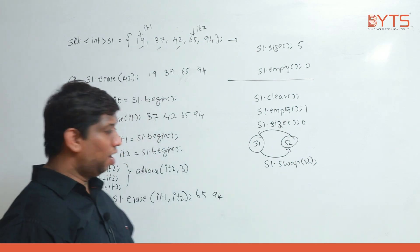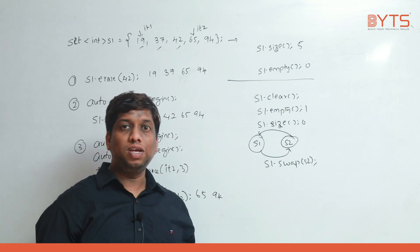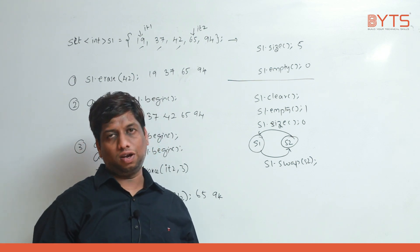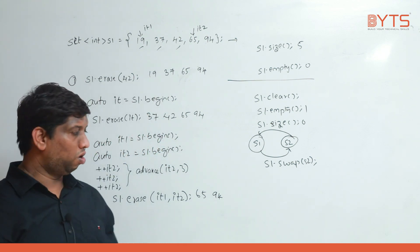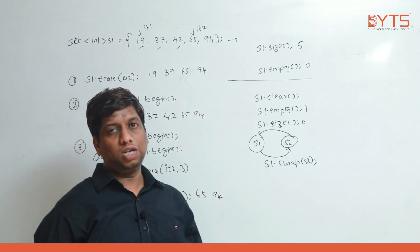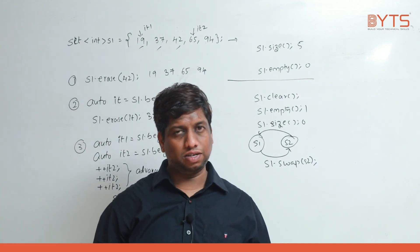There is no need of reversing a set, and sorting is also not needed on a set, because the data in the set is already sorted. That is the reason sorting is not needed. Next we will discuss some other functions.